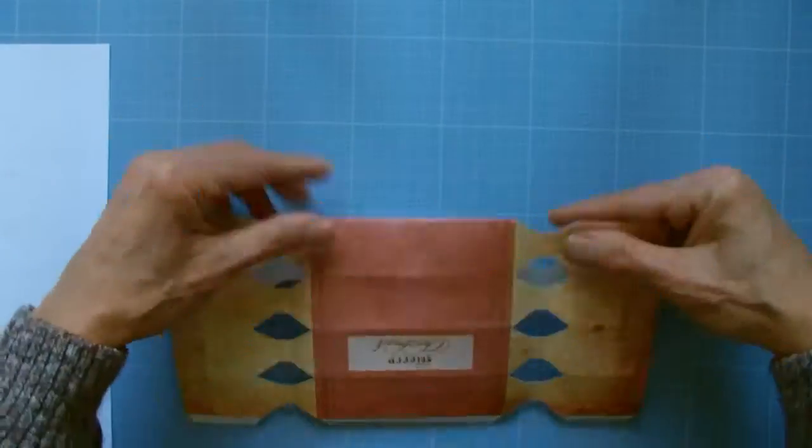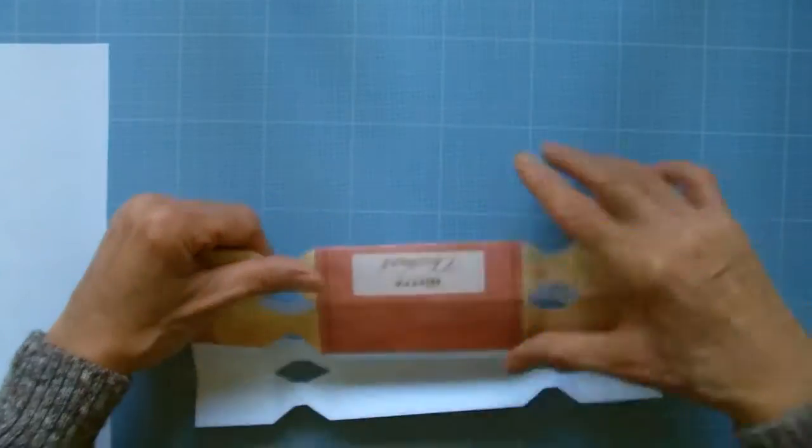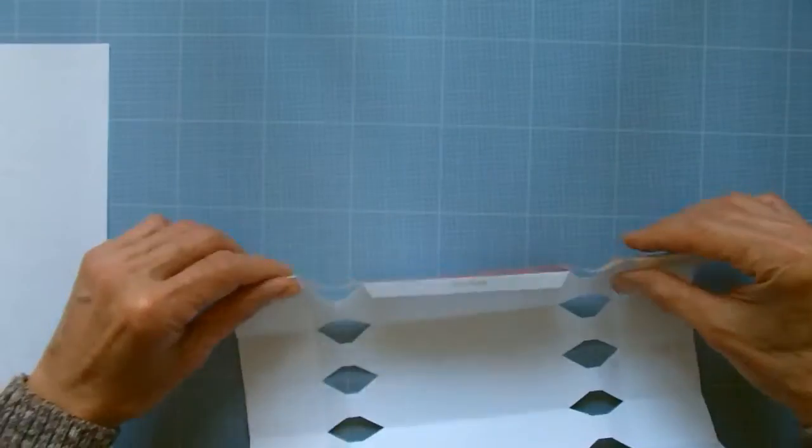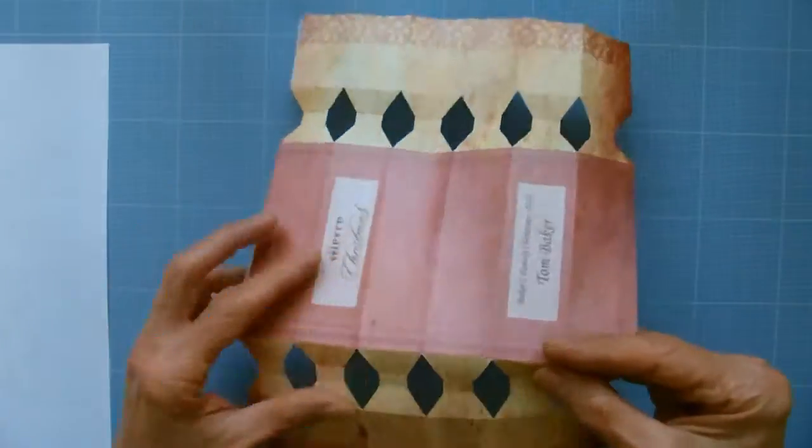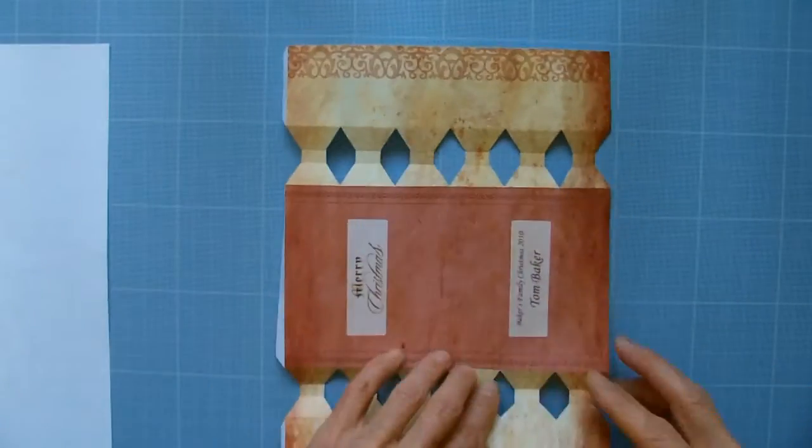Do mountain folds on all the horizontal lines on the cracker template. Now do both mountain folds and valley folds on the diamond areas.